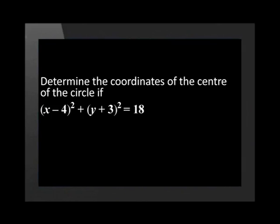It is very important to watch the signs of the values of a and b. Let's have a look at an example to show you what I mean. Determine the coordinates of the center of the circle if in brackets x minus 4, squared, plus in brackets y plus 3, squared, is equal to 18.